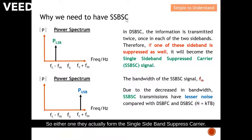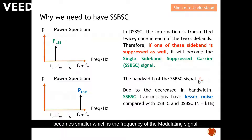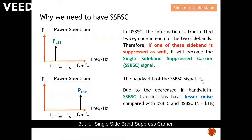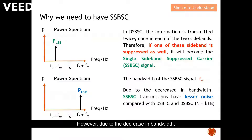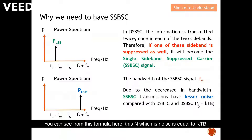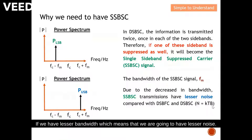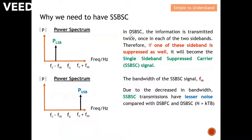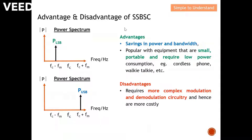For SSB-SC, either the lower sideband or the upper sideband forms the single sideband. The bandwidth of SSB-SC becomes smaller — it equals just the frequency of the modulating signal, compared to two times the frequency for DSB. Due to the decrease in bandwidth, SSB-SC has lesser noise, as given by the formula N = kTB, where k is Boltzmann's constant, T is temperature in Kelvin, and B is bandwidth.